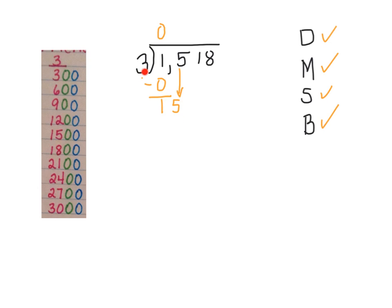So 15 divided by 3. If I look at my friendly numbers, 15 is on here, and it is the 5th multiple of 3. So I'm going to go ahead and record the 5 up here. Then I multiply. 5 times 3 is 15. So divided, I multiplied, I subtract.